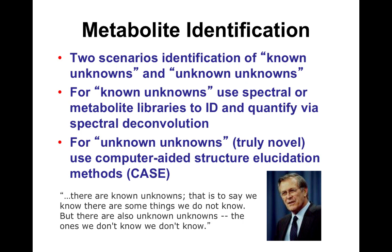In metabolite annotation or identification, you're dealing with two situations: the known unknowns and the unknown unknowns. The known unknowns are: here's my spectrum, what's in it? Unless you study spectra — whether mass spec, GC, or NMR — you're not going to be able to look at peaks and instantly identify them.